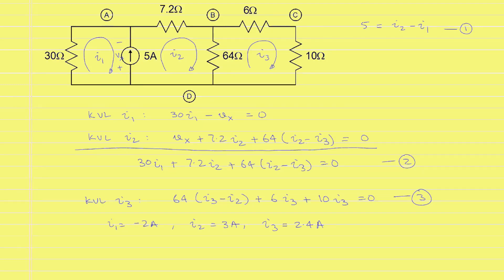To summarize the analysis of a circuit with a current source common to two meshes: we introduce a circuit variable, the voltage across this current source; write the KVL equations for the two meshes which have the current source in common; and add the two KVL equations to eliminate the voltage across the current source. We will end up with the same number of equations as unknowns and they can be solved for all the mesh currents.